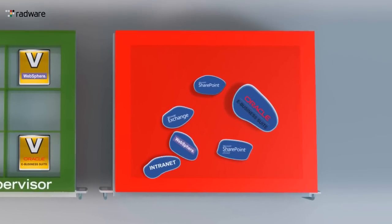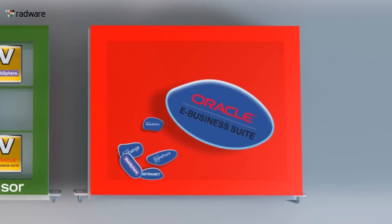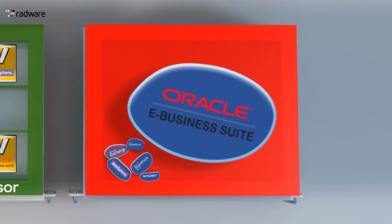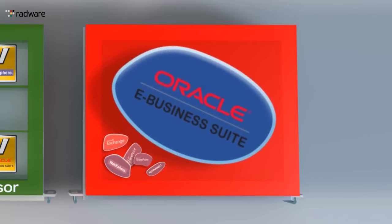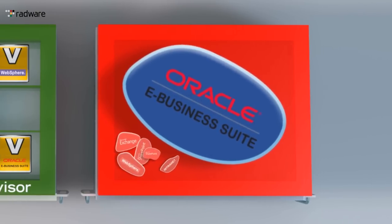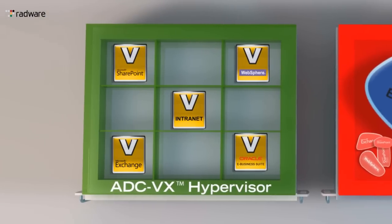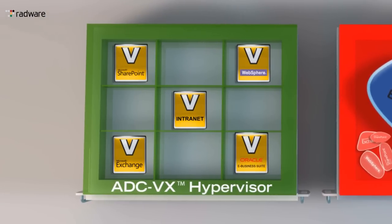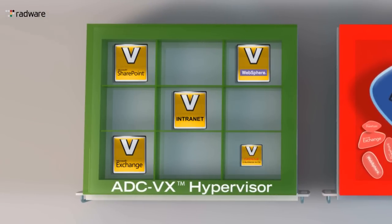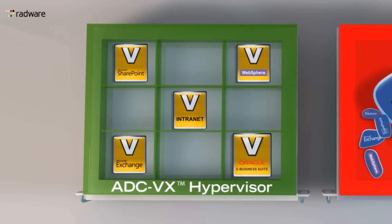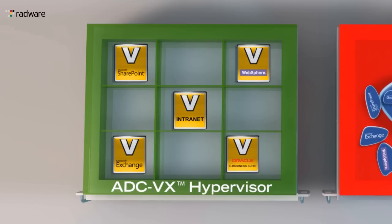Since the resources are shared between all applications, one application might impact the performance and SLA of the others. With ADC-VX, the resources of each VADC are reserved, resulting in predictable application performance and guaranteed SLA.